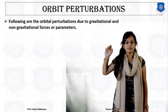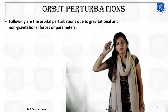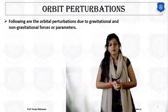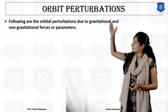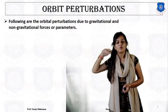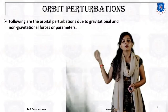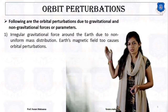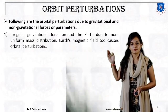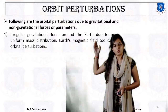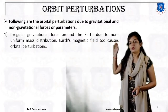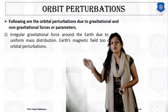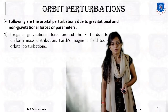Our next topic is orbital perturbation. Orbital perturbation is caused by gravitational and non-gravitational forces of the sun, moon, or other planets. The first cause is the irregular gravitational force around the earth due to non-uniform mass distribution, which causes deviation in the position of the orbit — that is called perturbation.